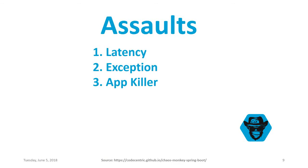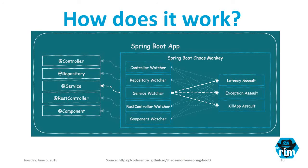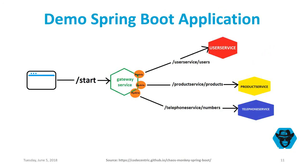The assaults are: Latency, Exception, and App Killer. Latency adds a delay to your API response. Exception throws a random Java runtime exception. App Killer kills your application. The five annotations — @Controller, @Repository, @Service, @RestController, and @Component — are scanned by their corresponding watchers, which communicate with the Latency, Exception, and Kill App assaults. By default, the Service watcher scans the @Service annotation and latency is the default assault.